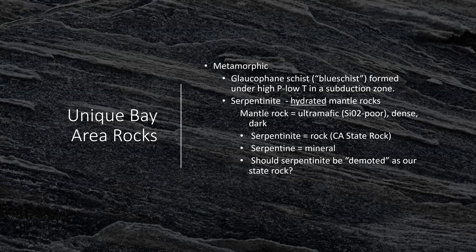Some of the unique Bay Area rocks include a lot of metamorphic rocks — serpentinite is one of them. We also see some schist, specifically blue schist — glaucophane schist — that formed under a high-pressure, low-temperature situation in the subduction zone. This would have formed in the accretionary wedge. We also see serpentinite, which is very common in this area and consists of hydrated mantle rocks.